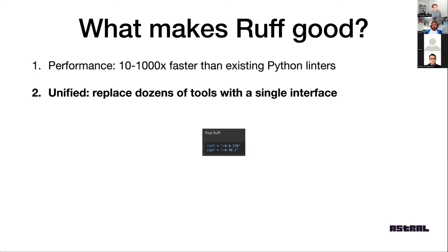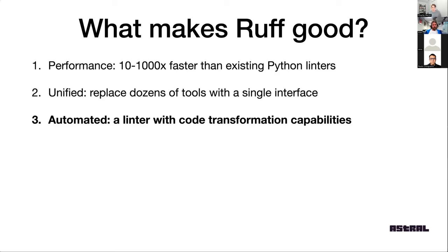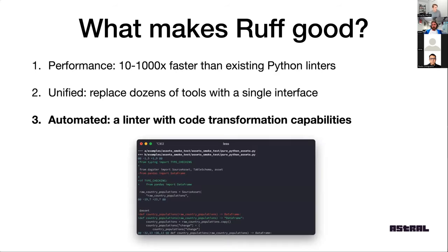People appreciate that it really simplifies their dependency list, and they only have to learn one tool with all this functionality bundled into it. Ruff also does a lot of code transformation — not just flagging errors, but automatically fixing them for you. For example, in Python, if a variable or import is only used as a type annotation, there are ways to avoid having to import it, which makes your code faster at runtime. Ruff can identify imports and variables only used in typing contexts, move them into typing-only blocks, quote the annotations, and do all this transformation automatically.